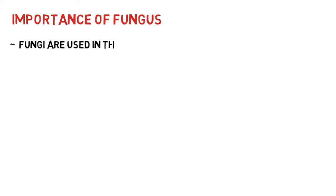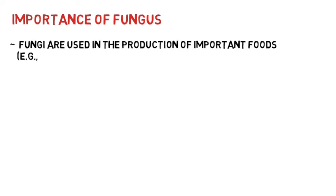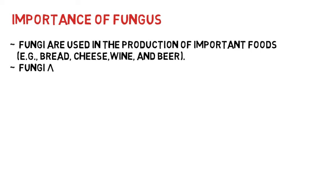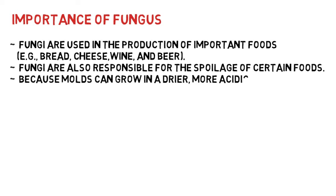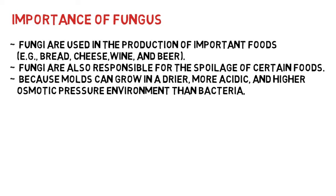Sporangiospores are formed within a sac called a sporangium on a stalk, by molds such as Rhizopus and Mucor. In addition to their medical importance, fungi are also used in the production of certain foods such as wine, bread, cheese, and beer. Fungi are also involved in the spoilage of foods such as jams, vegetables, grains, and fruits, because molds can grow in drier, more acidic, and higher osmotic pressure environments than bacteria.